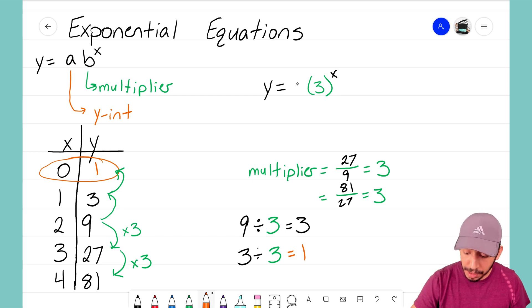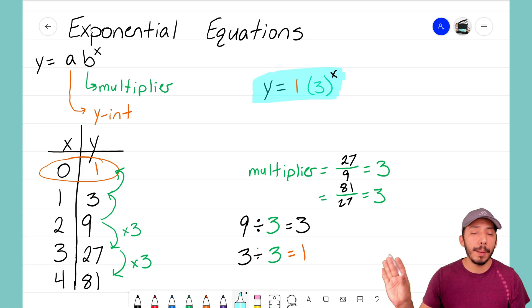I can now complete my exponential equation and I know for a fact now that this equation, y equals 1 times 3 to the x, represents my table to the left.